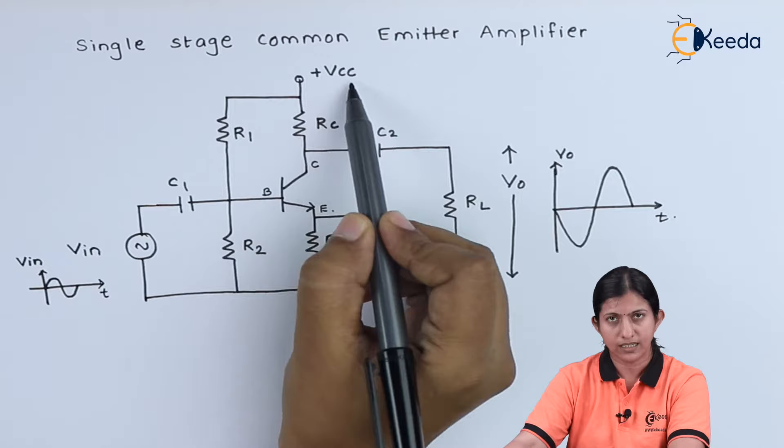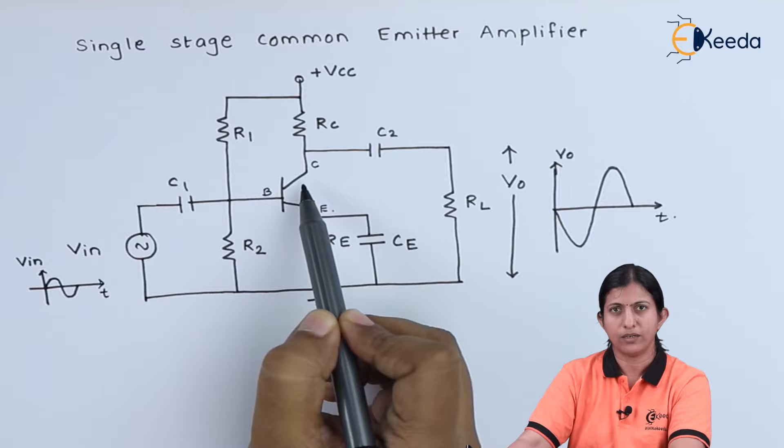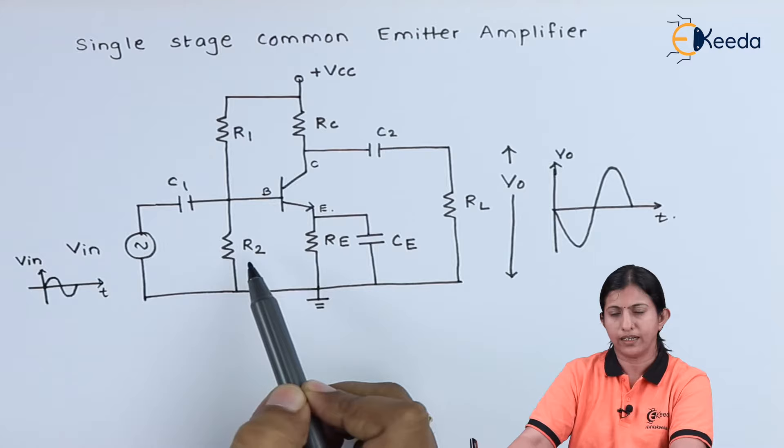DC supply VCC is applied through resistor RC to the collector terminal of the transistor.